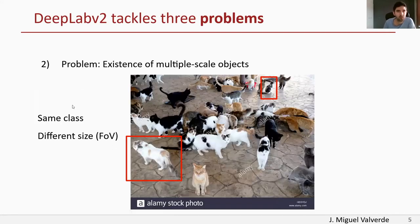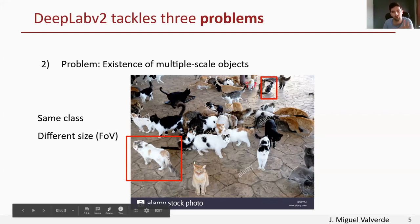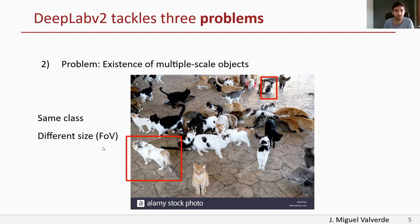The second problem DeepLabV2 tackles is the existence of multiple scale objects. This is quite common in datasets — you want to be able to classify or segment an object, like a cat, regardless of whether it's very big or very small in the image. Objects from the same class can have different sizes, and you need a different field of view. I'll explain field of view in more detail shortly.